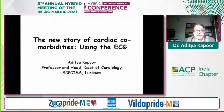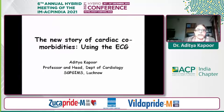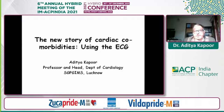We'll understand what etiological comorbidities we're talking about: rhythm abnormalities, a wide QRS — can it predict heart failure? Hypertrophy, bundle branch block, and how to diagnose old MI versus new MI. We all know the old criteria, but I'll share one or two new criteria as well.